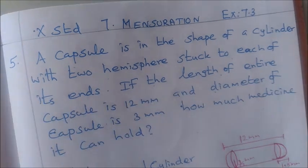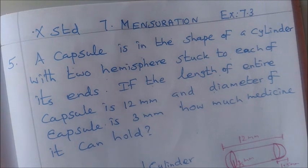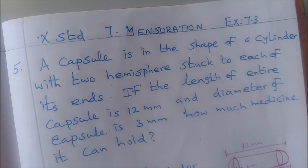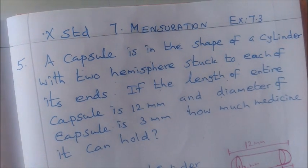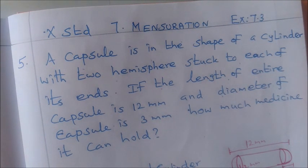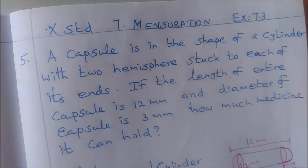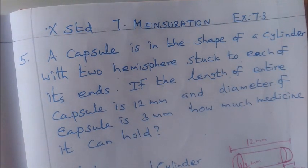This is 10th standard 7th unit mensuration exercise 7.3, 5th problem. A capsule is in the shape of a cylinder with 2 hemispheres stuck to each of its ends. If the length of entire capsule is 12 mm and the diameter of the capsule is 3 mm, how much medicine it can hold?